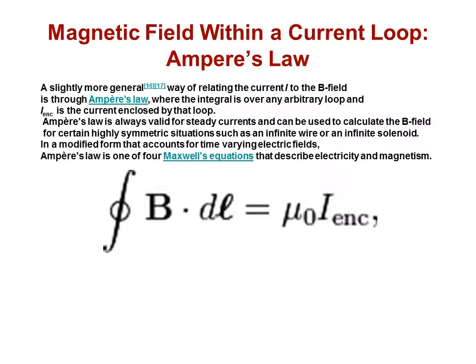Ampere's law relates to a magnetic field within a current loop. This relates current I to the B field, where the integral is over any arbitrary loop, and I enclosed is the current enclosed by that loop.